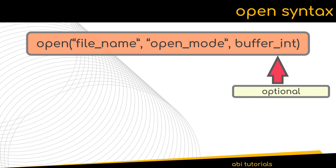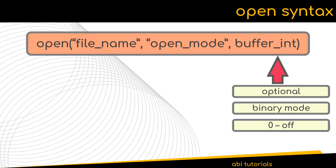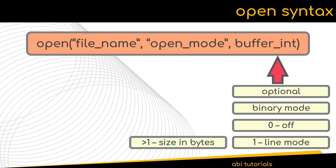The third parameter is optional. The buffer integer works only if you have opened the file in binary mode. If the buffer integer is set to 0, buffering is set to offline. If it is 1, buffering works in line mode and it works only for text-based files. If the buffer integer is any number greater than 1, that size will be the size of the buffer in bytes. If the buffer integer is not specified, Python's default buffering policy will be in effect.